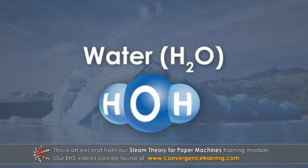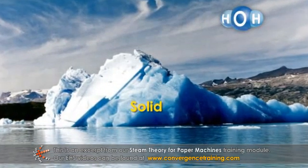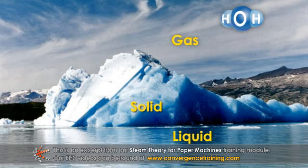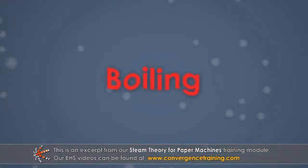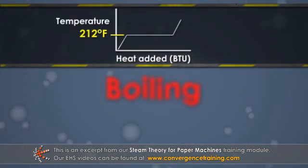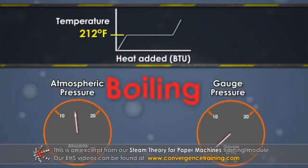Water, or H2O, exists in three phases—solid, liquid, or gas. The phase that water takes is determined by its temperature and pressure. There are some significant changes that occur as water goes from the liquid to gaseous phase. This transition is referred to as boiling, and it occurs at 212 degrees Fahrenheit at normal atmospheric pressure.